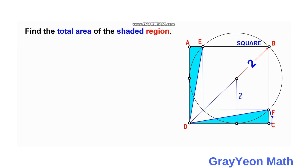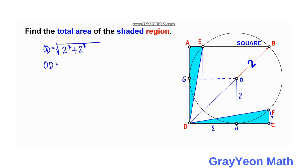Let's call the center O, and label the other points D and H. Notice that this length is also the radius — if you project from O to G it is parallel to that segment and congruent, so it is 2. Therefore OD equals the square root of 2² plus 2², which gives OD = 2√2.